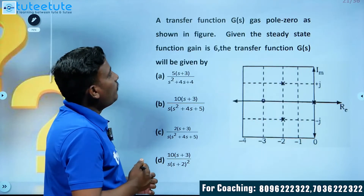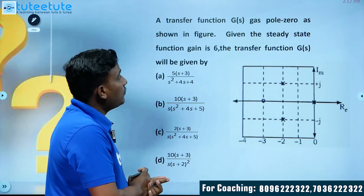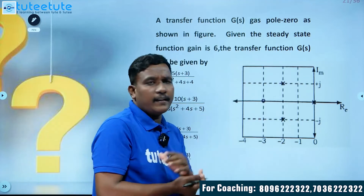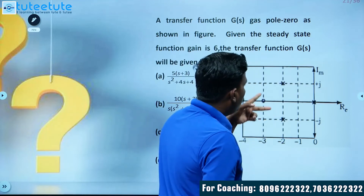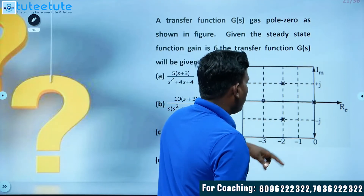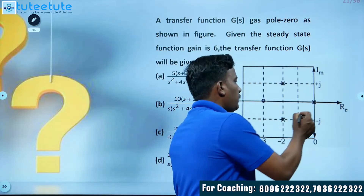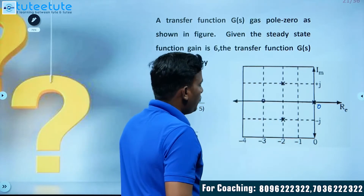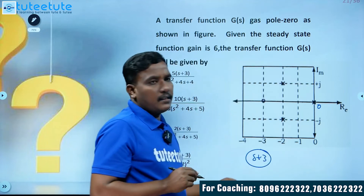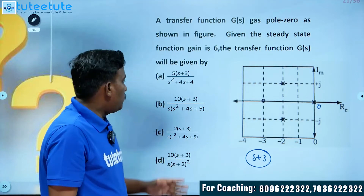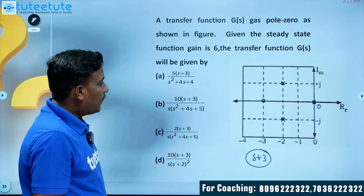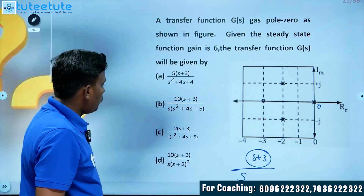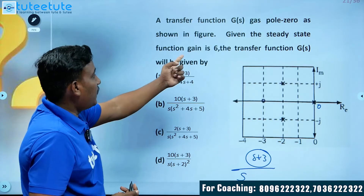Next question: the transfer function of the pole-zero diagram shown in the figure has a steady-state gain of 6. From the diagram, there are two poles — one at the origin and one at another location — and one zero on the left side at -3, giving a factor of (s+3).